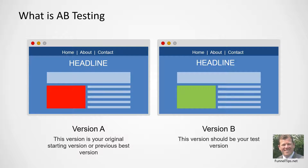By A-B testing your landing pages we can easily and quickly understand what our customers prefer by measuring their actions. The first step in creating an A-B split test is deciding what you're going to test. The principle of A-B testing is to test small changes each time until you achieve your winning or final version. You can test a number of different areas, but the most popular are headlines, page content, videos or images, calls to action, and forms.